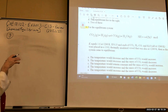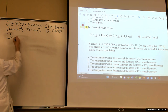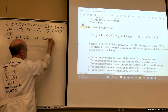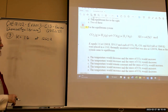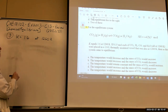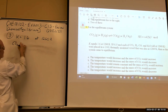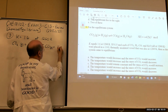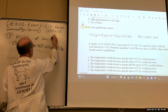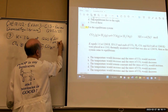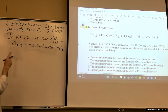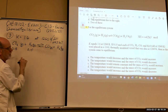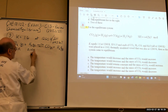For this reaction, K equals 1.6 at 1260 K. CO₂ + H₂ ⇌ CO + H₂O, ΔH = +42 kJ. We're given 0.15 mole each in a one-liter container, so that's 0.15 molar for each one. That's our starting position.